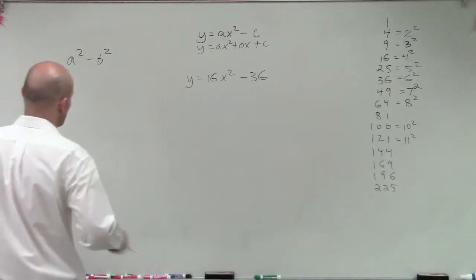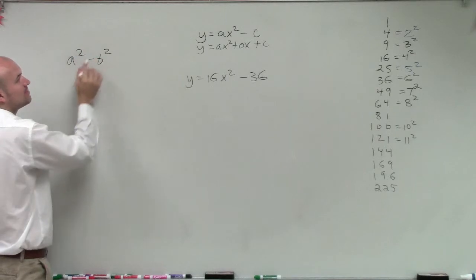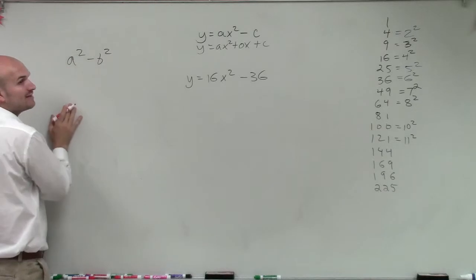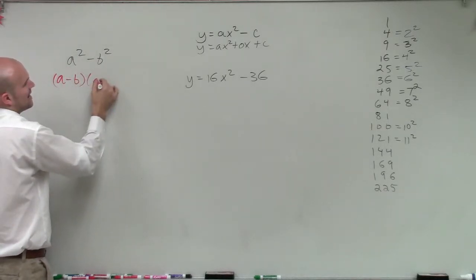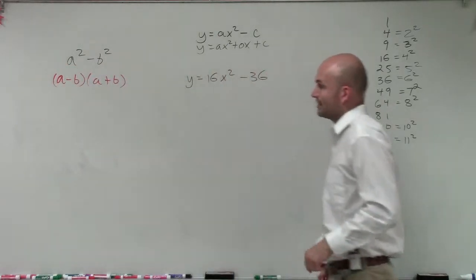Now remember, when we're looking at the difference of two squares, we have to have an expression that's in this format of a number squared minus another number squared. In this case, I have variables a squared minus b squared. When we have it written like this, we can factor it down to a minus b times a plus b. So that would be the factored form of that.